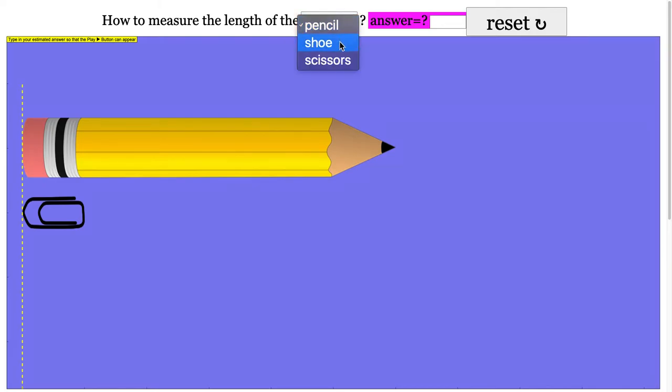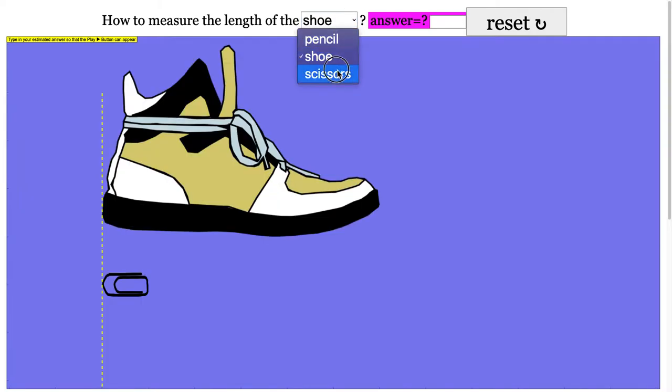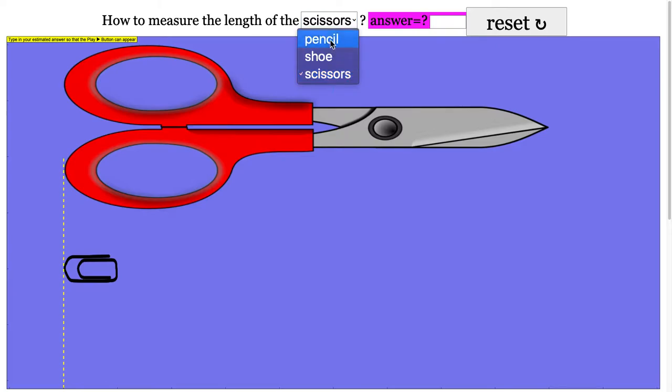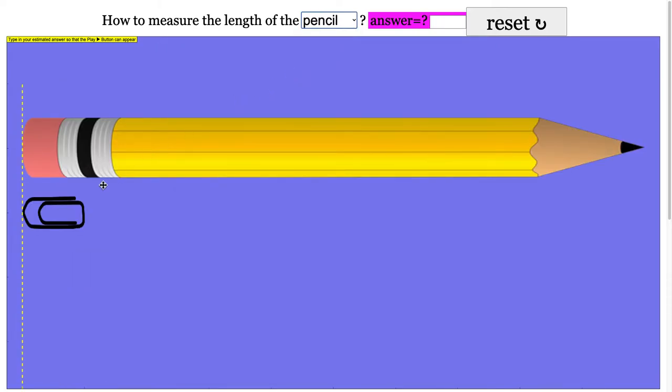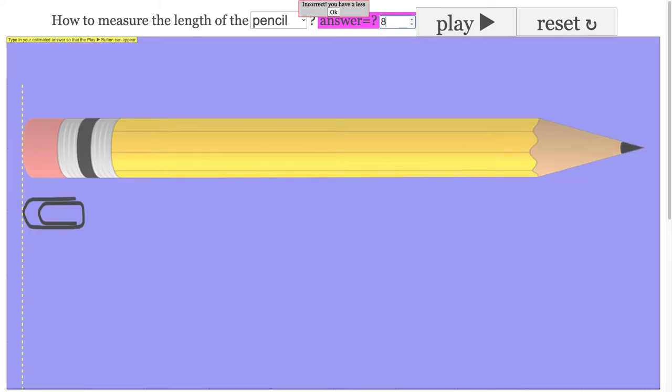You can select different objects like a pencil, which will have randomized lengths. In terms of pedagogy, we want the student to estimate the length first. So the student looks at the paper clip and decides on an estimate, and then they'll be prompted with feedback on whether it's right or wrong.